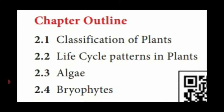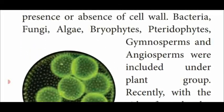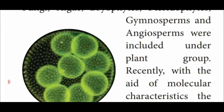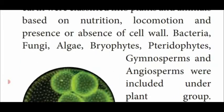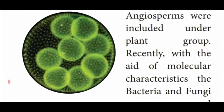All over the world, living organisms are divided into plants and animals based on their mode of nutrition, locomotion, and presence or absence of cell wall. Bacteria, fungi, algae, bryophytes, pteridophytes, gymnosperms, and angiosperms are included in the plant kingdom. The kingdom is divided into plant kingdom and animal kingdom, with the plant kingdom containing all these groups.